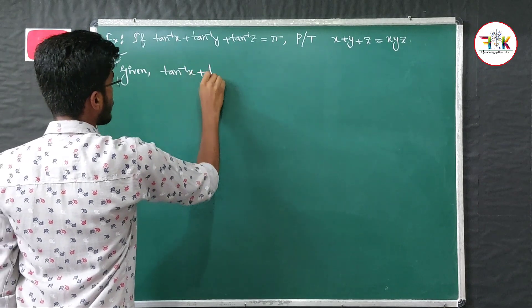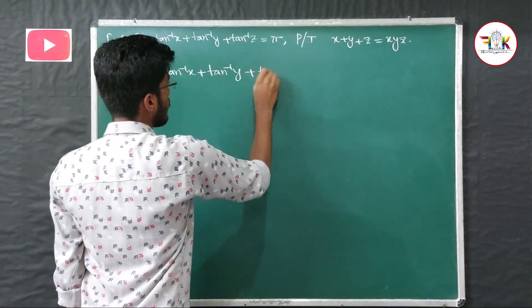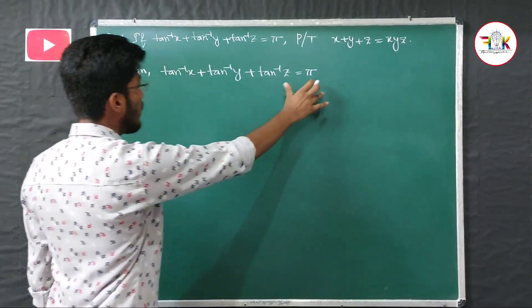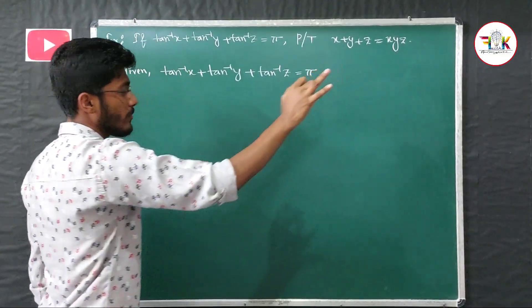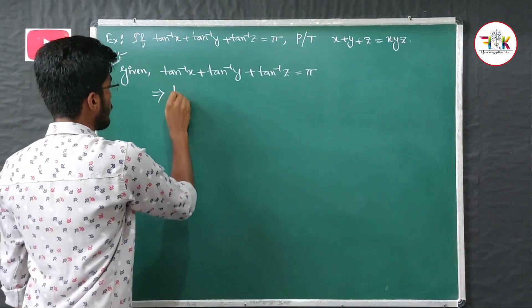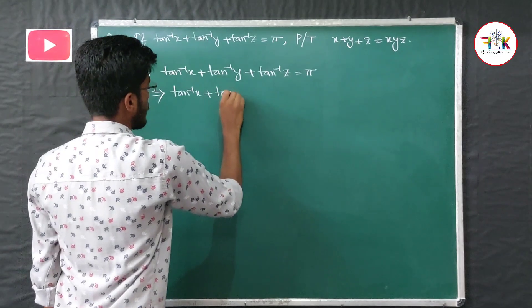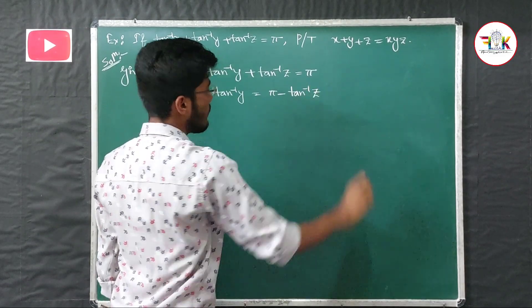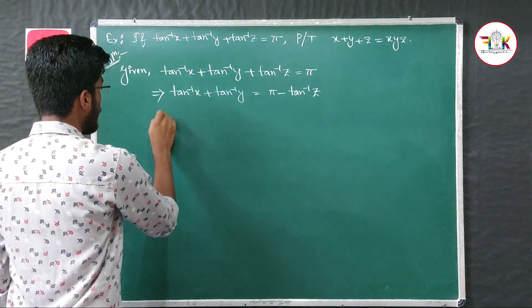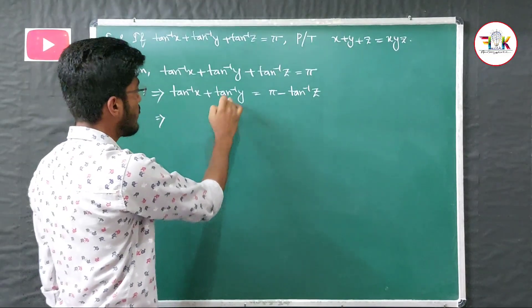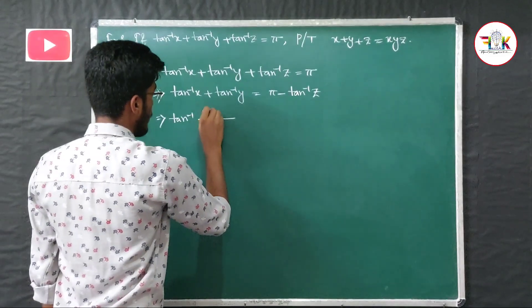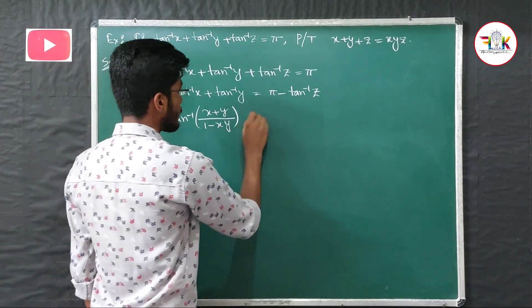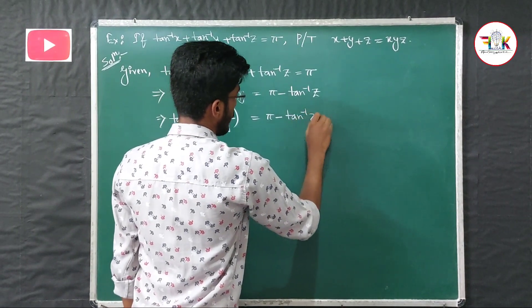So we have tan⁻¹x + tan⁻¹y + tan⁻¹z = π. We rearrange: tan⁻¹x + tan⁻¹y = π − tan⁻¹z. Now applying the formula, tan⁻¹x + tan⁻¹y = tan⁻¹[(x + y)/(1 − xy)]. So this equals π − tan⁻¹z.